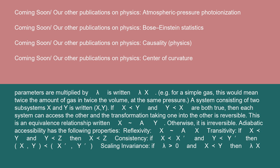A system consisting of two subsystems X and Y is written XY. If X precedes Y and Y precedes X are both true, then each system can access the other, and the transformation taking one into the other is reversible.